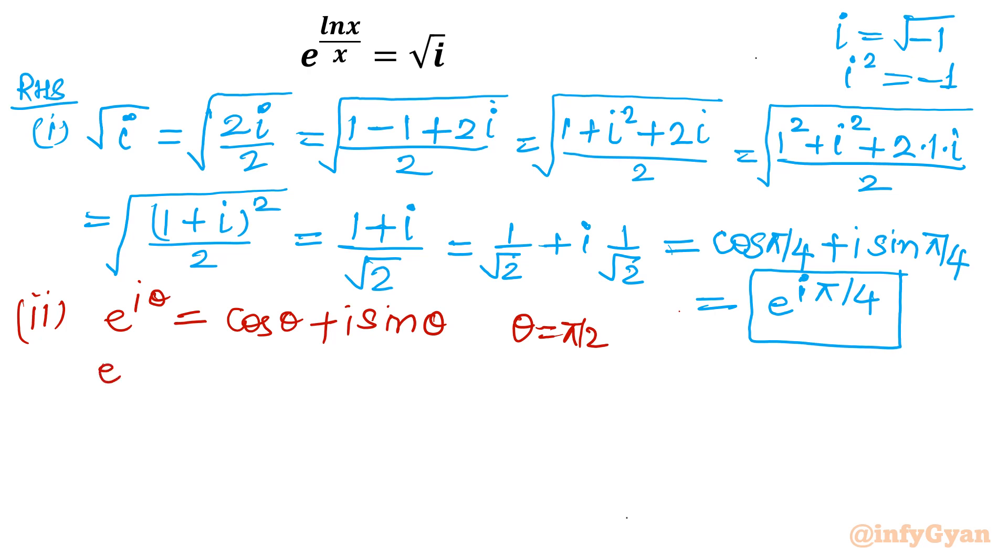Because my target is i. So if I will write pi by 2 in place of theta then it will become cos pi by 2 plus i sin pi by 2. Sin pi by 2 is 1, cos pi by 2 is 0. So this will come out i.